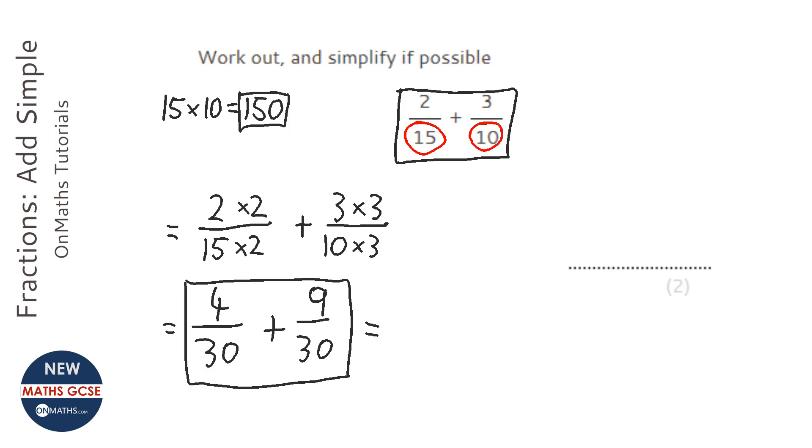The easy thing to do now is just add the tops. So 4 plus 9 is 13 over 30. I can't cancel that down anymore, so the answer is just 13 over 30.